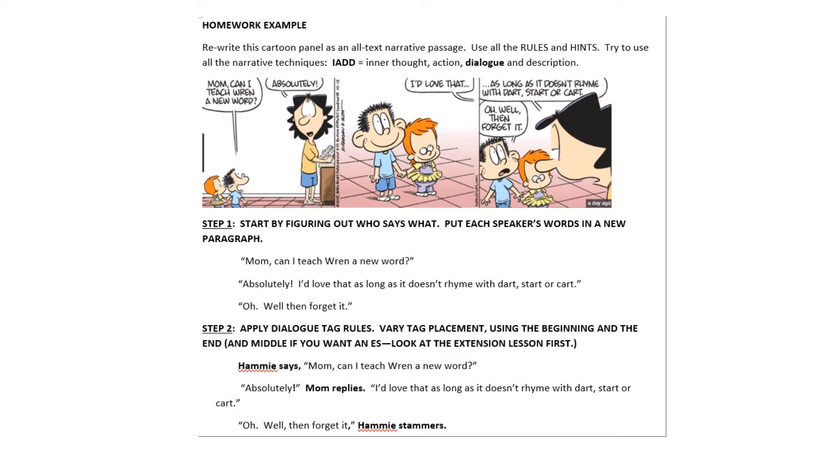Step two is to add some dialogue tags and apply the dialogue tag rules. Remember that the dialogue tag can come at the beginning, the middle, or the end. To show that I've really got this, I'm going to use one dialogue tag in each place. So the first sentence, I'm going to put the dialogue tag at the beginning. I'm going to say, Hammy says, comma, and then Hammy's words.